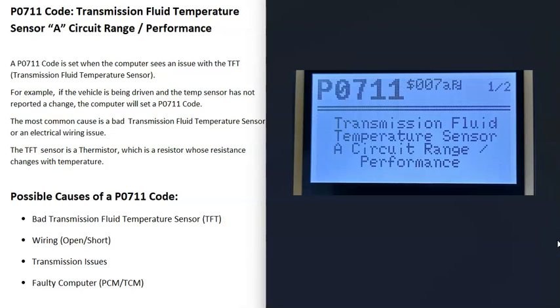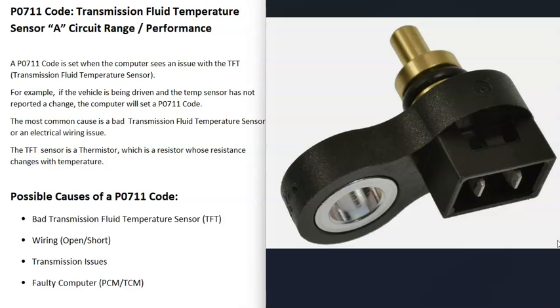What would be some possible causes of a P0711 code? The first thing that could cause this is a bad fluid temperature sensor. It might have just gone bad and needs to be replaced. You can test this sensor if you want to. These sensors are what's called a thermistor, which is a resistor whose resistance changes with temperature.